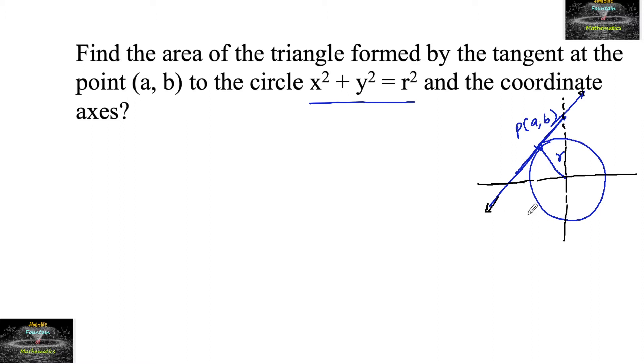Point P can be anywhere in any coordinate we can consider. Let us consider the point is here and the area of triangle formed. There is a triangle formed like